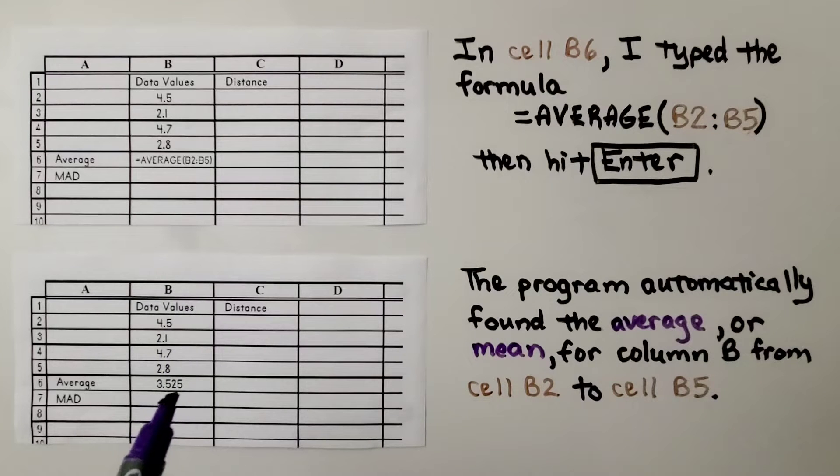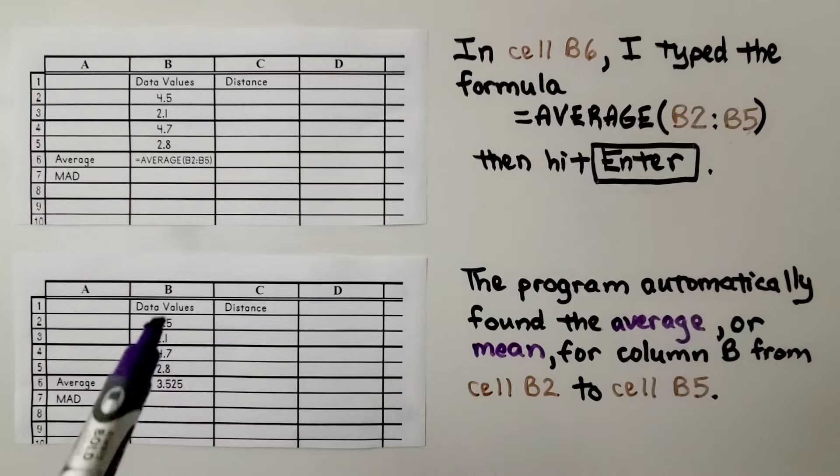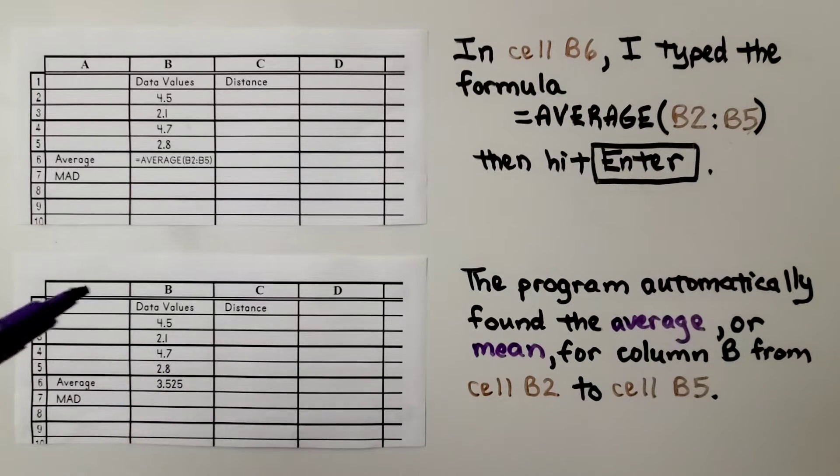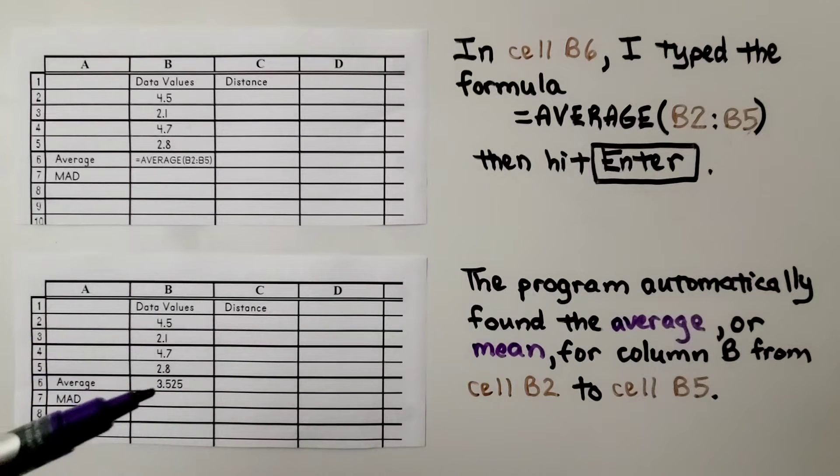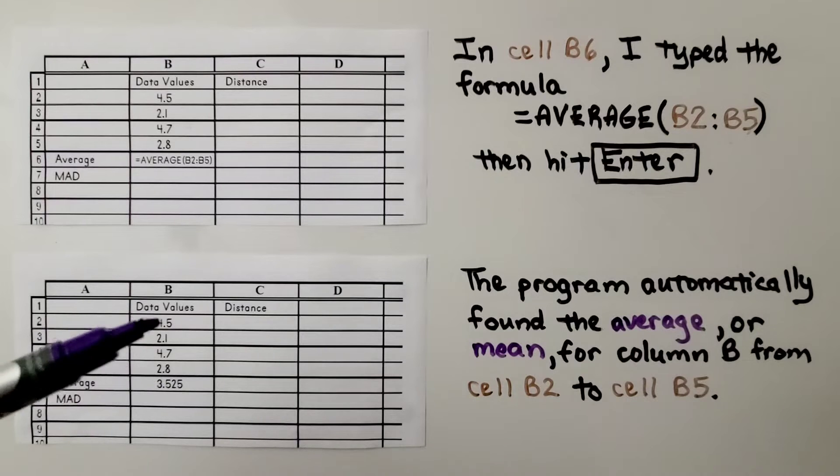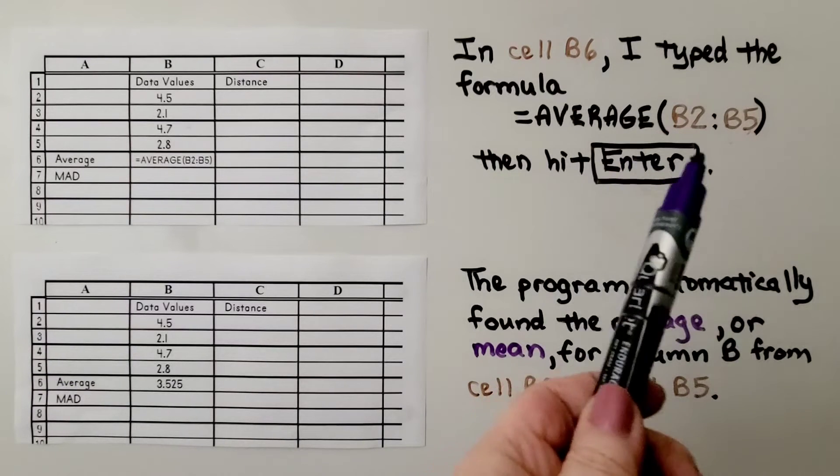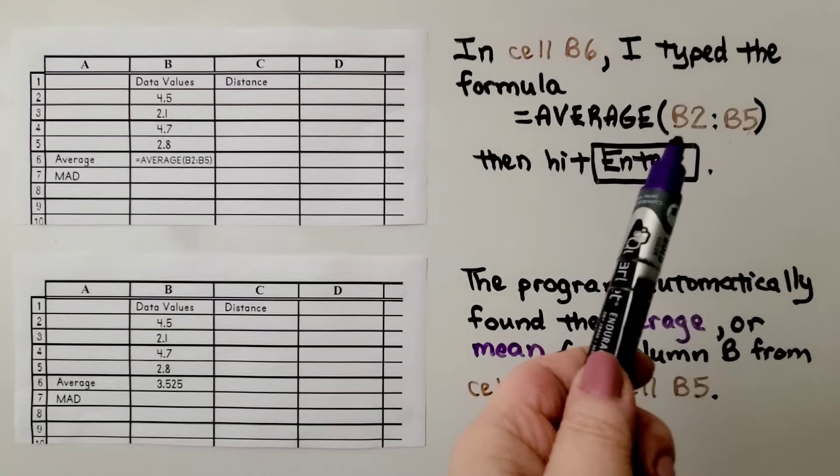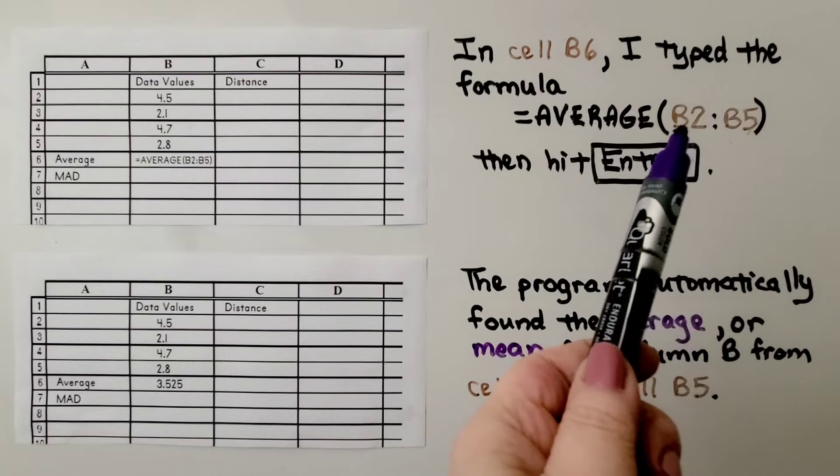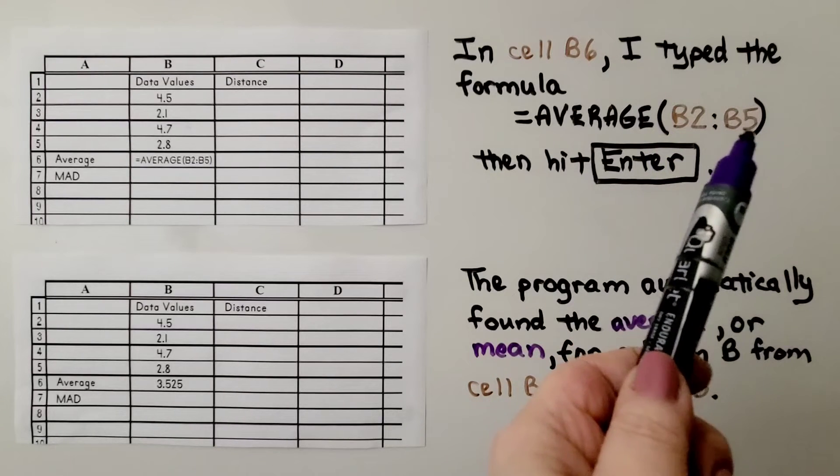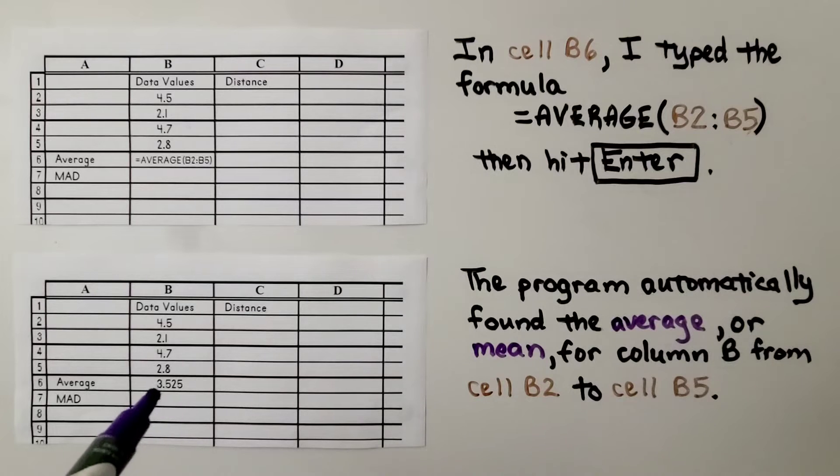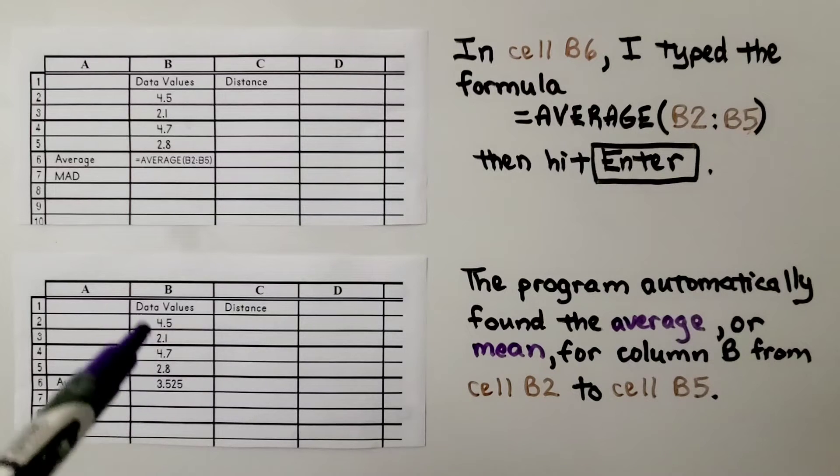When I hit enter, the program automatically found the average, or mean, for column B from cell B2 to B5. So by using this formula, it found the average of all the values that were in B2 to B5. And we have 3.525 as our average for these data values.